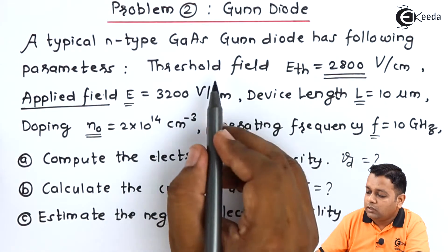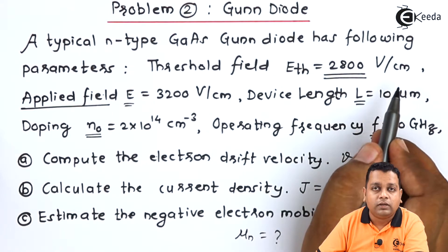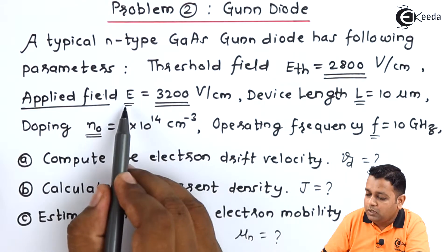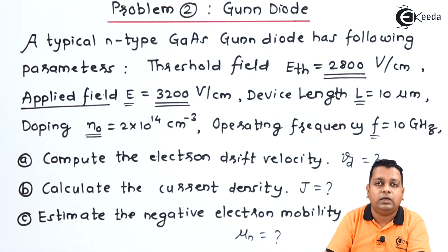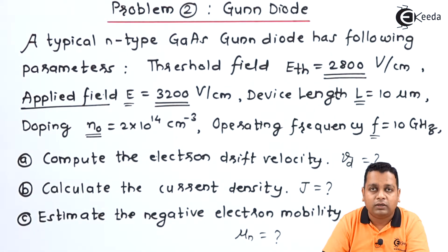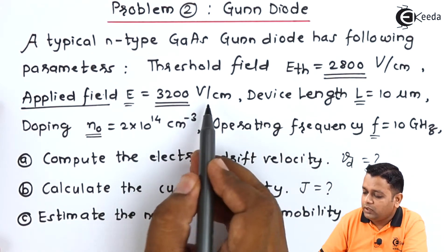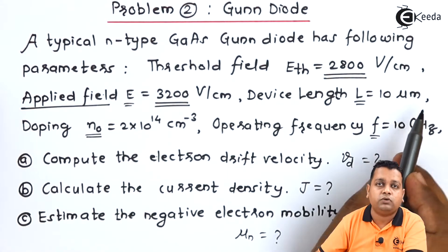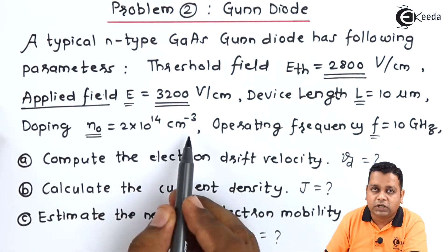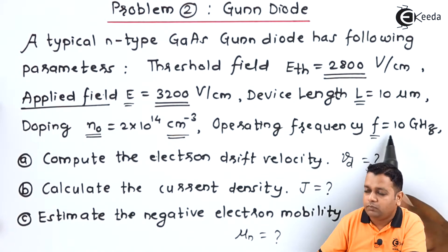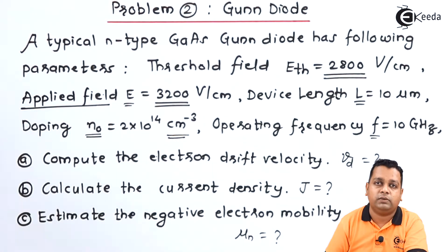The threshold field 2800 V/cm must be converted to SI units. The applied field 3200 V/cm must exceed the threshold field for Gunn mode operation, which gives a reduction in electron drift velocity and hence negative resistance. The device length 10 micrometers becomes 10 × 10⁻⁶ m, doping concentration is converted to per meter cube, and operating frequency becomes 10 × 10⁹ Hz.